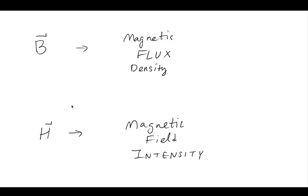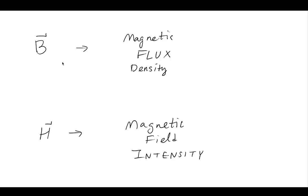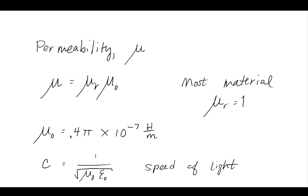Throughout this, we're going to be dealing a lot with these two vectors. B is the magnetic flux density, whereas H is the magnetic field intensity. The flux density may include some material knowledge, whereas H may not. The little mu that we see is the permeability — the total permeability is typically given as the relative permeability multiplied by the constant permeability.